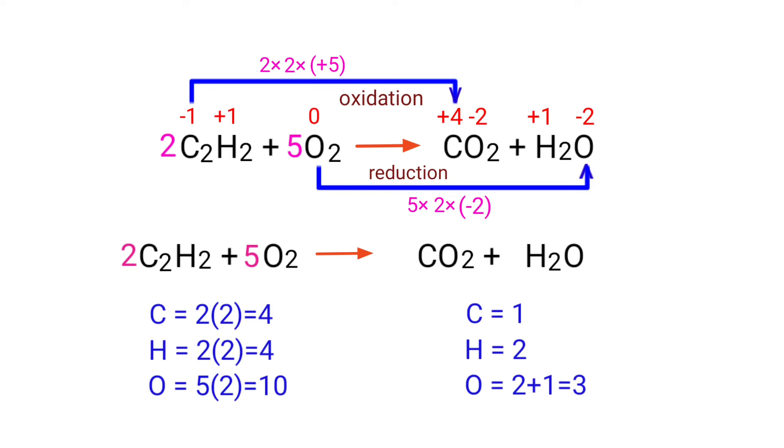The number of atoms are not balanced on both sides. To balance the chemical equation, we need to make use of coefficients. A coefficient is a number that we place in front of a chemical formula.